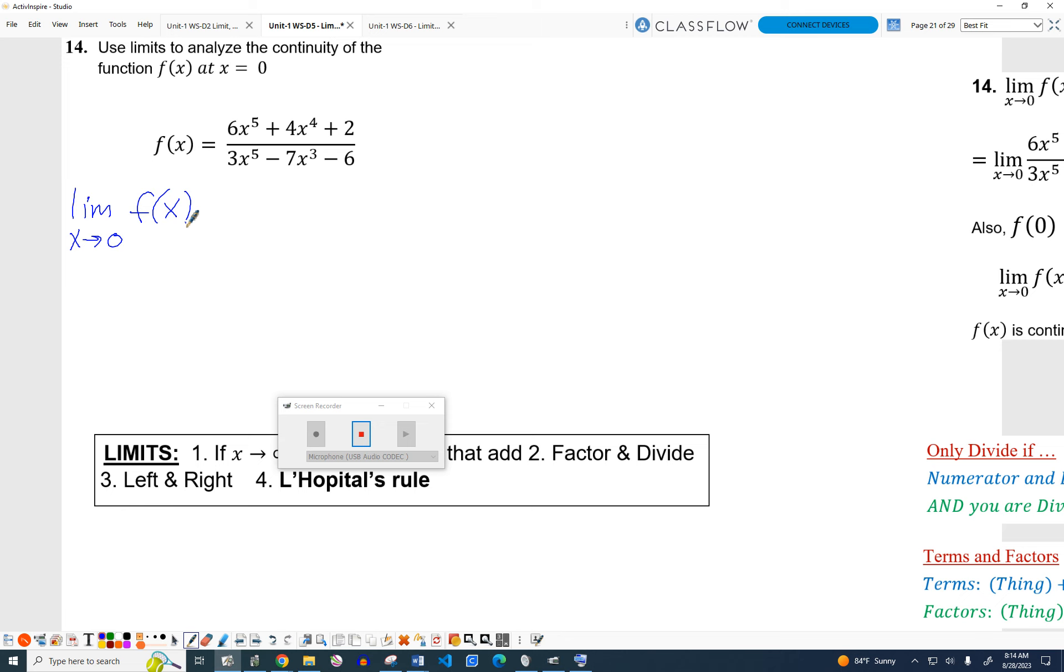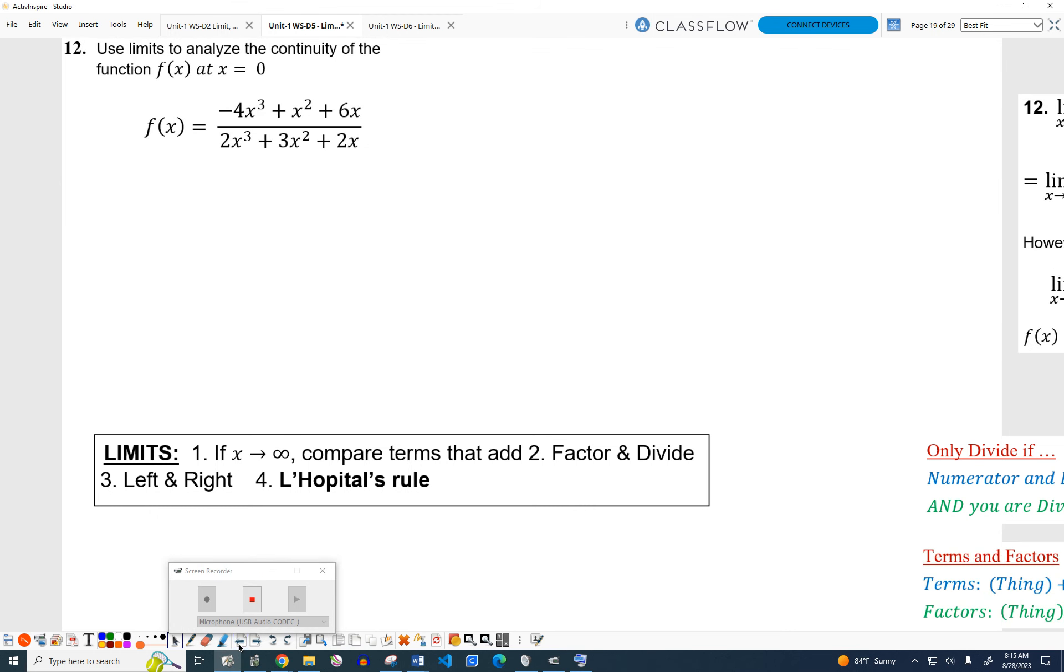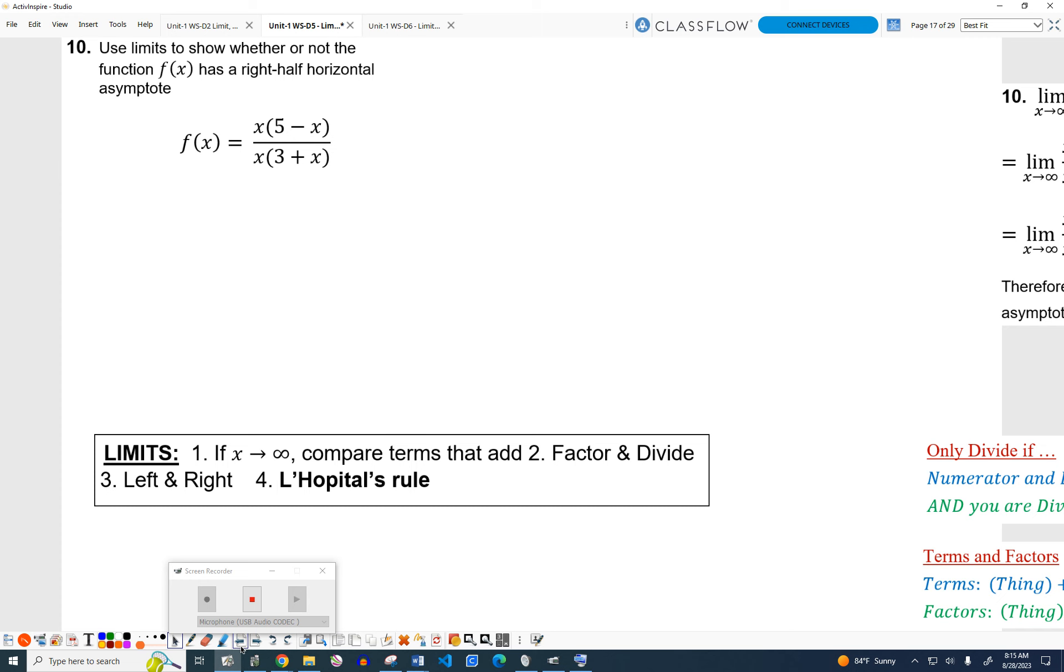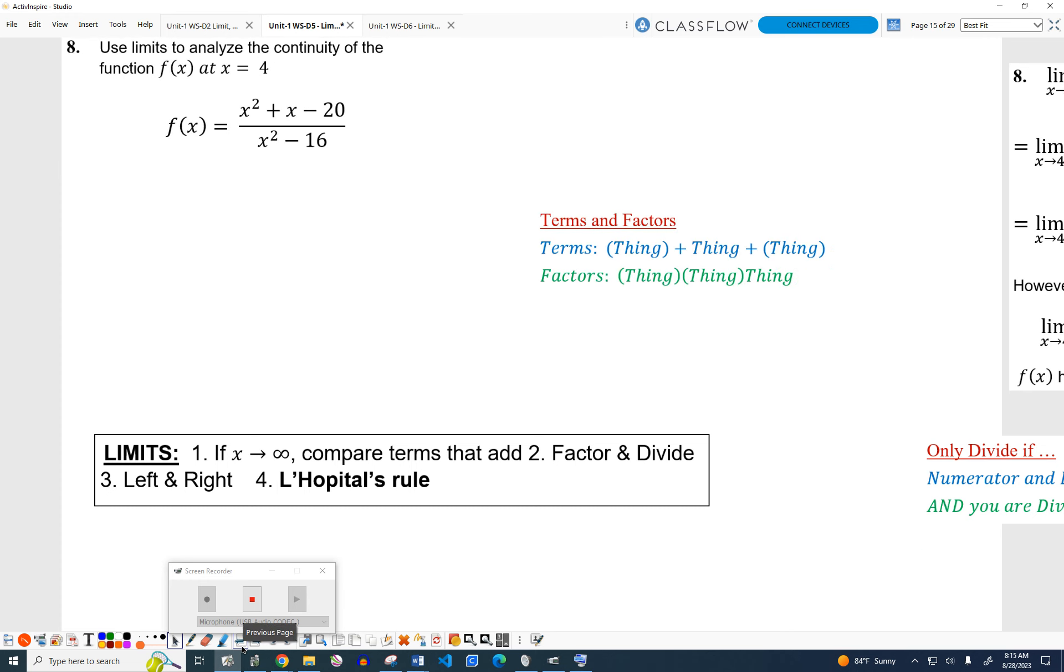Next thing we want to try and do is factor and divide. From my experience, if they're going to have you factor, it's either going to be really simple factoring, like the one we did a minute ago where we just pull out an x. There's one other thing I would check for: I would check for a nice quadratic. This is a pretty basic quadratic, we have x squared, some number times x, then some number. So these are often factorable. I'd say about 99% of the time. This is factorable. A lot of you just call this a difference of squares.